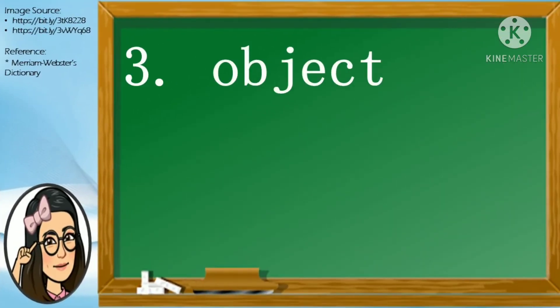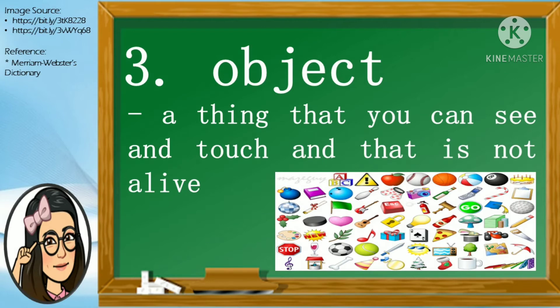Number 3. Object. O-B-J-E-C-T. Object. An object is a thing that you can see and touch and that is not alive. Object. O-B-J-E-C-T.